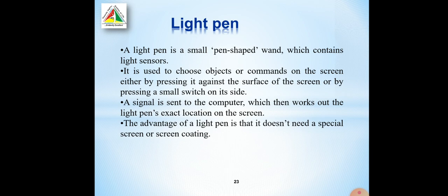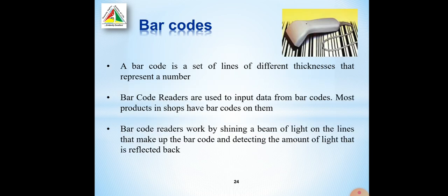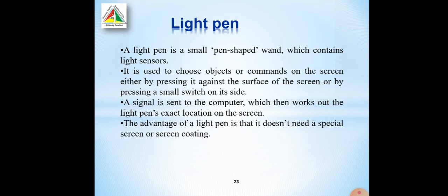Another input device is the light pen. A light pen is a small pen-shaped device. It is used to choose objects or commands on the screen either by pressing it against the surface of the screen or by pressing a small switch on its side. A signal is sent to the computer, which then works out the light pen's exact location on the screen. The main advantage of the light pen is that it does not need a special screen or screen coating.